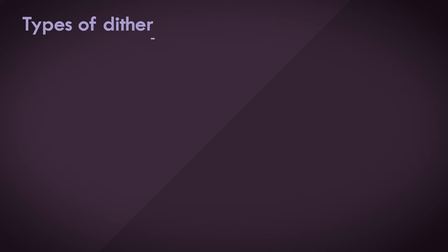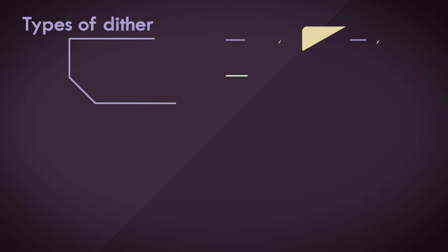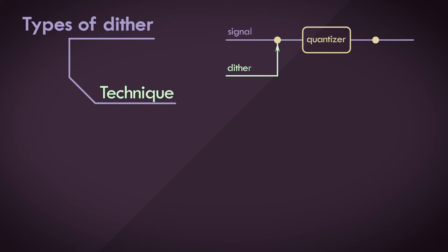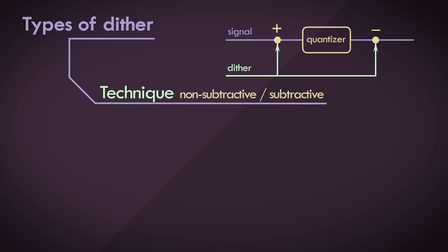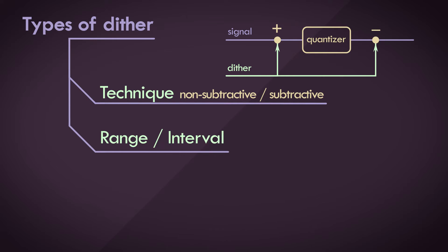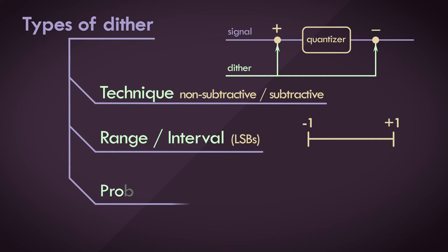They're generally categorized based on the technique — either non-subtractive or subtractive dither — the range or interval of the random values, usually measured in LSBs or least significant bits, and based on the probability density function.